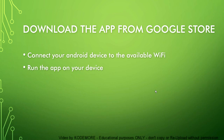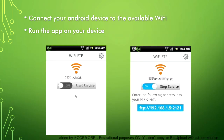The second step is to run this application. First, make sure you are connected to the available Wi-Fi connection. You will get a screen with a button that says 'Start Service' — when you are connected, this button will be enabled. When you click it, you will get a URL or address. Make sure you note it down or memorize it, because this is the address you will use from the FTP client on your PC.